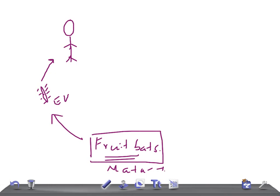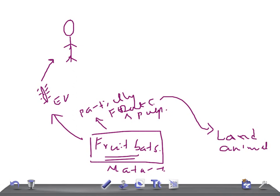What happens is this fruit bat drops the partially eaten fruits and pulp. When the fruit bat drops the partially eaten fruits and pulp, they are eaten by land animals. These land animals then infect human beings. This is how it's transmitted. Fruit bats are the natural host of this Ebola virus.